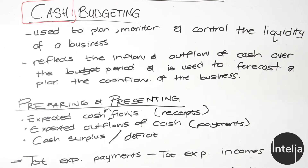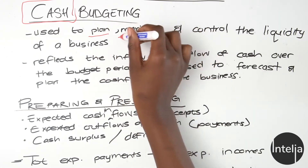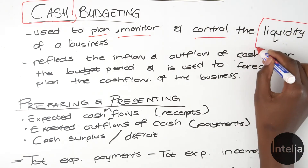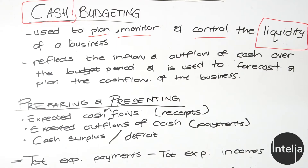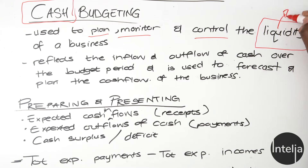These statements only focus on expected cash inflows and outflows. Cash budgets are used to plan, monitor, and control the liquidity of a business. We did speak about liquidity when we were looking into analysis and interpretation of statements, so you know about liquidity already — it is to test the liquidity of a business.